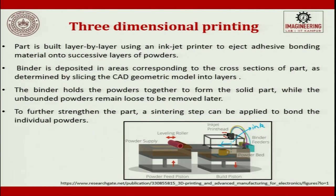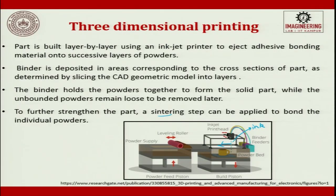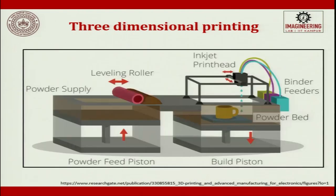To further strengthen the part, a sintering step can be applied to bond the individual powders. Whatever is produced at this stage is called a green-stage product, which does not have full strength. Sometimes the part is immersed in a thinner and dried to make it scratch-proof and increase strength. Alternatively, you put the complete product inside a furnace and perform a sintering step, so the adhesive evaporates and the powder joins and consolidates to produce the required output.